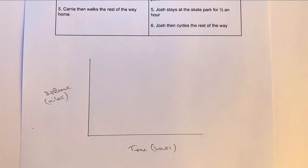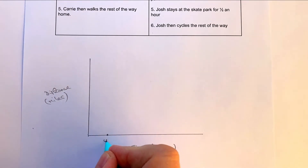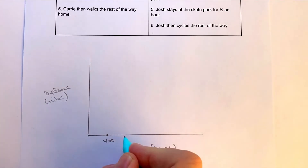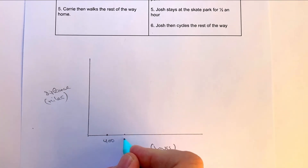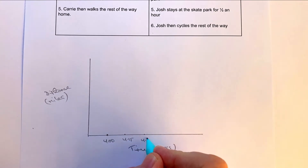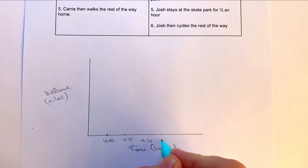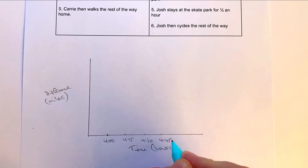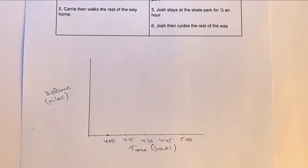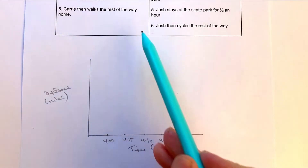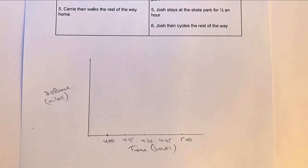Both students leave school at four o'clock, so here's four o'clock. I'm going to put in 4:15, 4:30, 4:45, and then five o'clock. I have obviously prepared for this, but you would need to read through all of the information at the top and work out from those the kind of timings that you need.